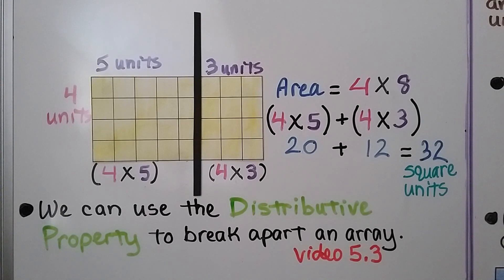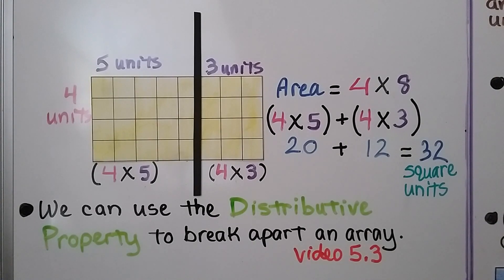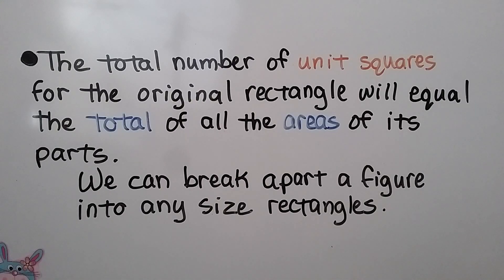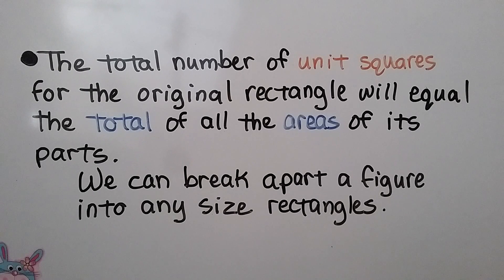Four times five is equal to twenty, plus four times three which is equal to twelve, and that's equal to 32 square units for the entire yellow rectangle. Breaking apart the eight, we used the distributive property. The total number of unit squares for the original rectangle equals the total of all the areas of its parts.